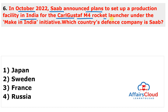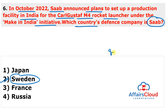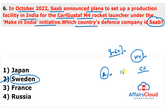In October 2022, Saab announced plans to set up a production facility in India for the Karl Gustav M4 rocket launcher under the Make in India initiative. Saab is a defense company of Sweden. The Karl Gustav M4 is a shoulder-fired weapon system and one of the world's most popular pieces of military equipment, utilized primarily by special forces. It can fire anti-armor and illuminating rounds as well as various other types of ammunition, with a maximum range of 1,500 meters.